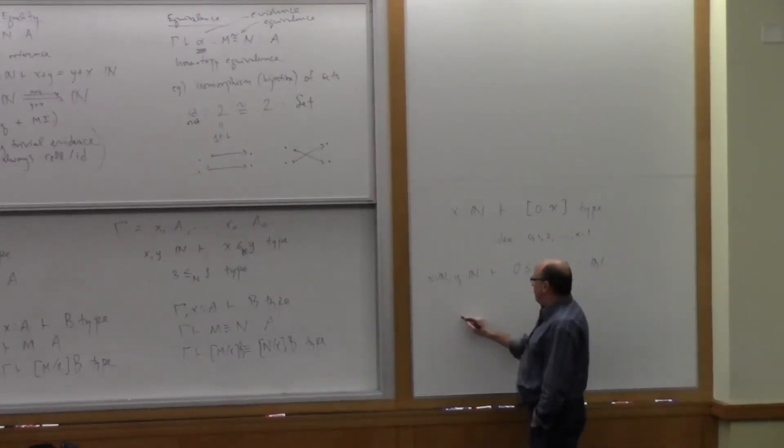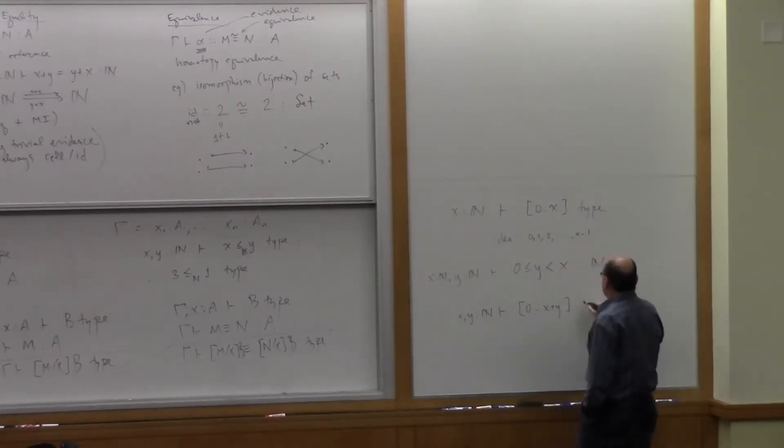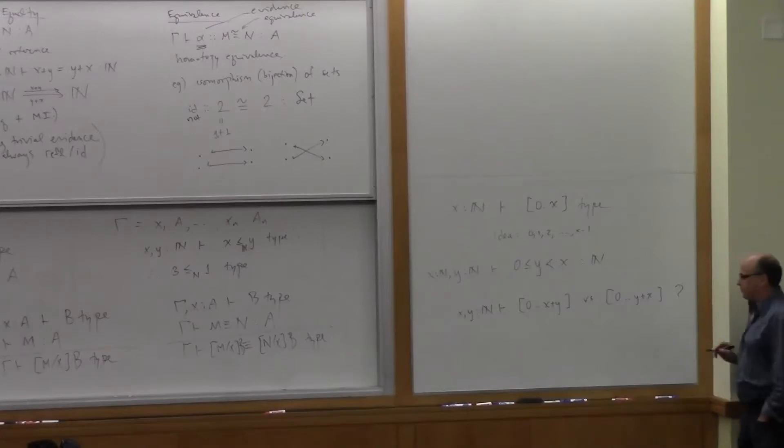And the question is, suppose I have now X and Y in N, and I want to say something about the relationship between the type zero to X plus Y versus the type zero to Y plus X.